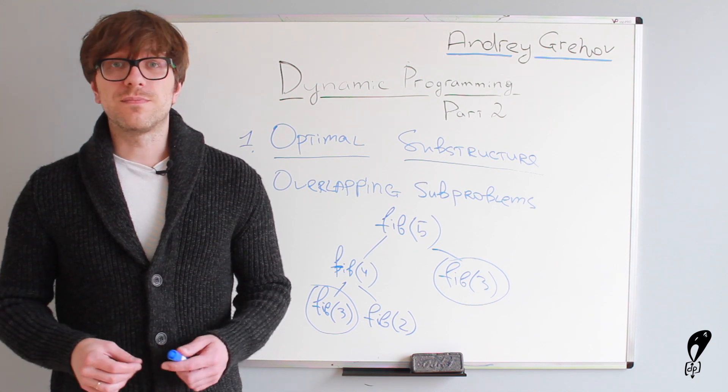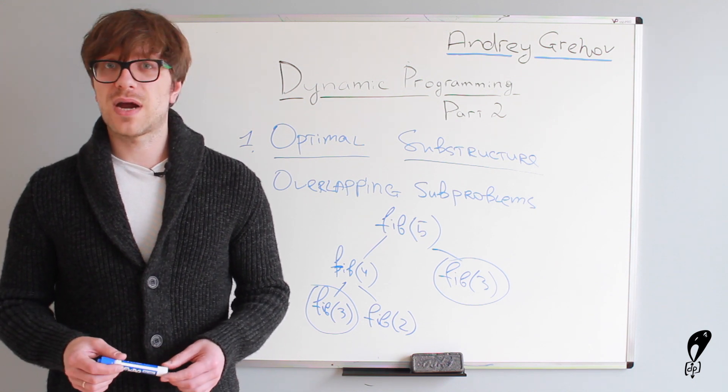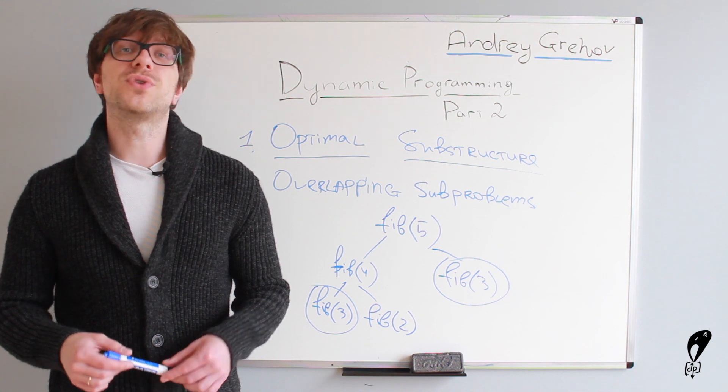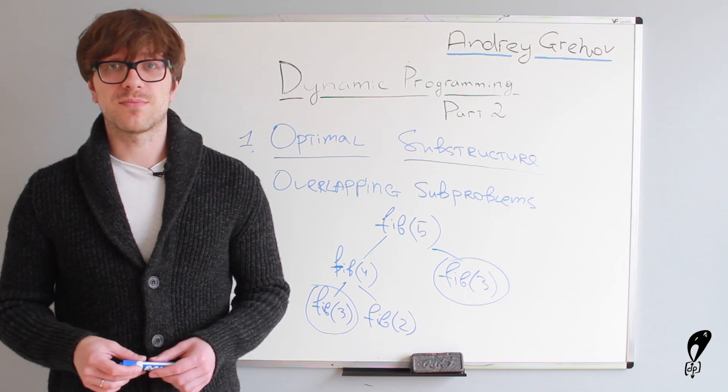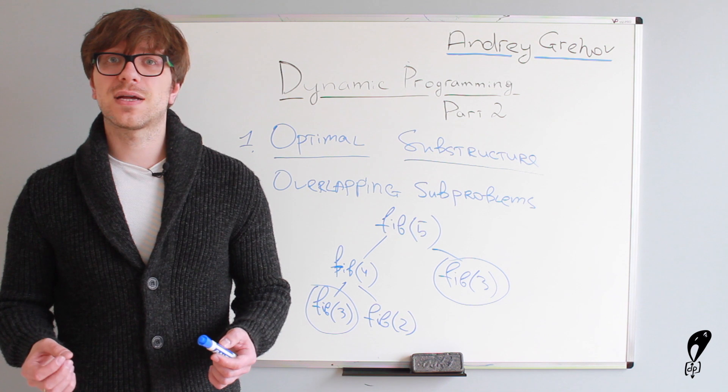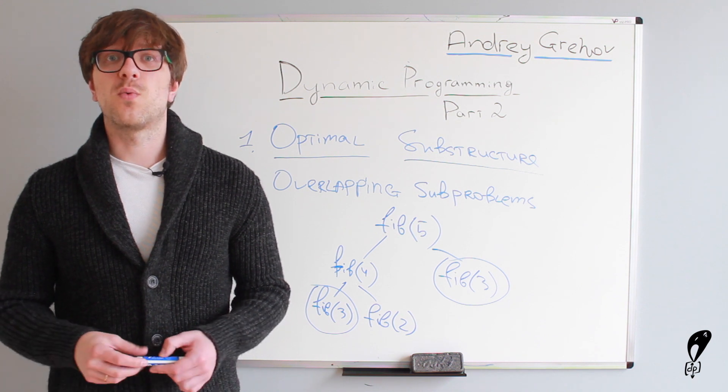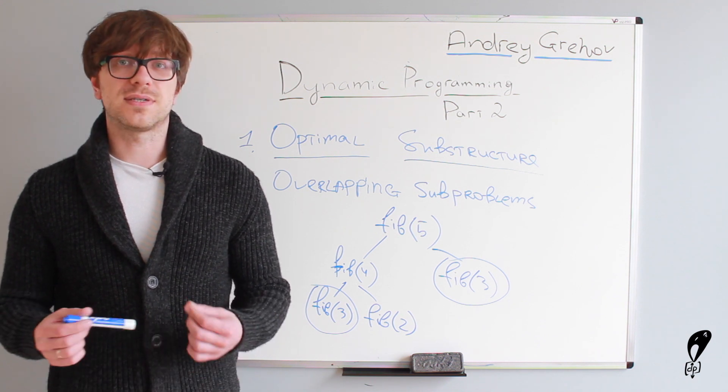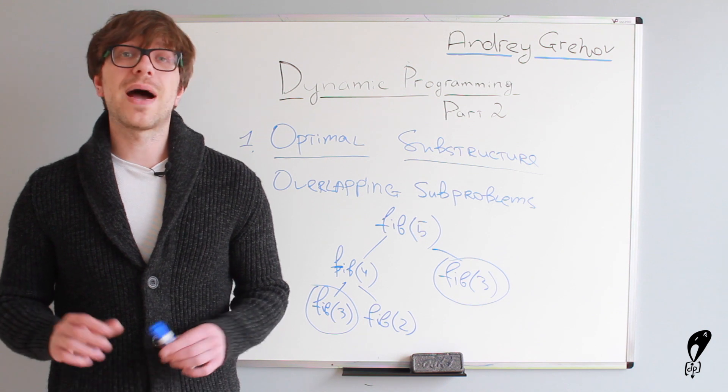Obviously, not every problem has these properties, which is why you can't always use dynamic programming. And there are mathematical ways to prove whether those properties exist at all. But my goal is different.